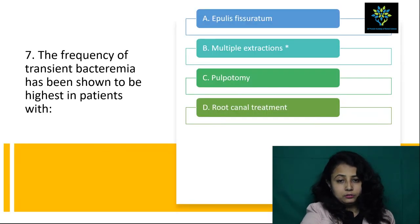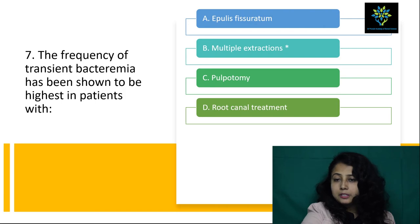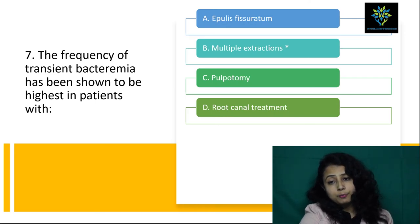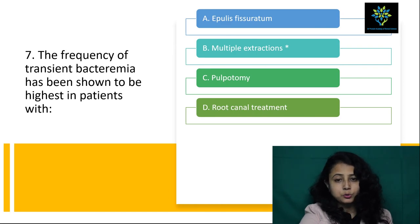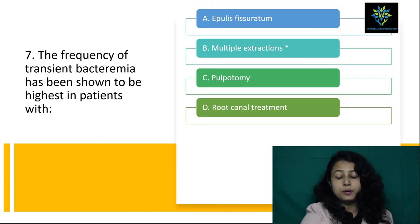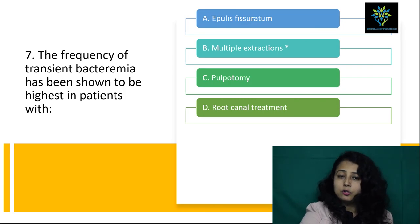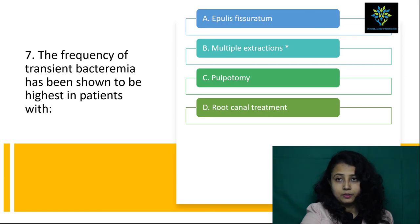Then another question: the frequency of transient bacteremia has been shown to be highest in patients with — epulis fissuratum, multiple extraction, pulpitomy, root canal treatment. The answer is multiple extraction. Why? Because in case of multiple extraction only, there are more chances of infection and more chances of bacteremia. In case of pulpitomy, it's not always that bacteremia will be present. For root canal treatment, what we do is remove the bacteria, make the canal bacteria free and sterile — so option D we cannot take, option C we cannot take. Epulis fissuratum also may not have presence of bacteria. So only in case of multiple extraction can there be transient bacteremia, and this can also lead to subacute bacterial endocarditis.